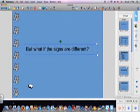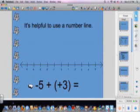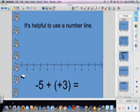What about if the signs are different? That's what we're going to talk about today. It's really helpful to use a number line. Here I have negative 5 plus positive 3.